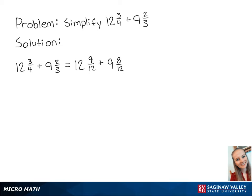Now we need to convert the mixed numbers into fractions. 12 and 9 twelfths is equal to 153 twelfths, and 9 and 8 twelfths is equal to 116 twelfths.